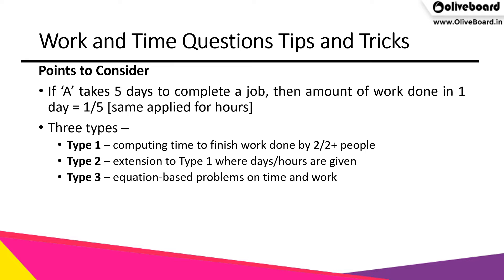Whenever we look at this kind of question, we have to first understand one simple rule or principle to focus on: if A takes five days to complete a job, then the amount of work done in one day by A is 1/5. The same applies for hours — if A takes five hours to complete a job, then in one hour the work done is 1/5.